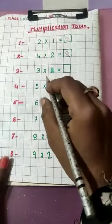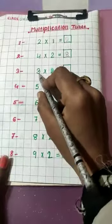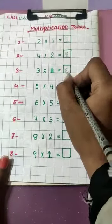So, do no side se karenge. Is side se bhi karenge to wahi answer anahin aata hai. Or is side se karenge to bhi wahi answer anahin aata hai. 6. Thik hai?